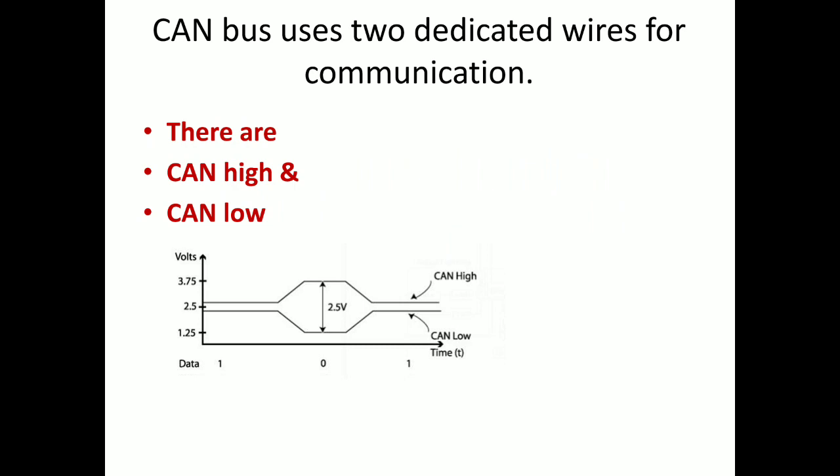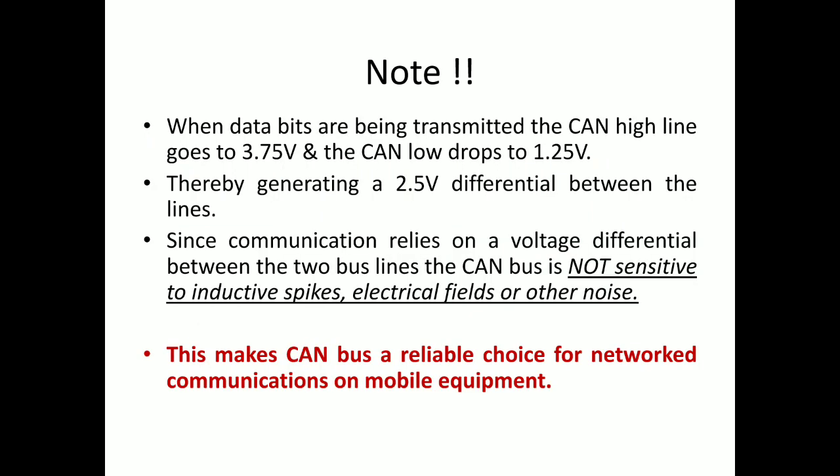Note: when data bits are being transmitted, the CAN high line goes to 3.75V and the CAN low drops to 1.25V, thereby generating a 2.5V differential between them. Since communication relies on voltage differential between two bus lines, the CAN bus is not as sensitive to inductive spikes, electrical fields, or other noise.